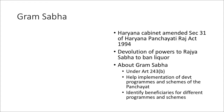The next important topic is the Gram Sabha — a constitutional institution. The Haryana Cabinet has taken an in-principle decision to bring an amendment to Section 31 of the Haryana Panchayati Raj Act. This amendment relates to Gram Panchayat local areas, specifically regarding liquor ban provisions and the Gram Sabha under the Haryana Panchayati Raj Act.